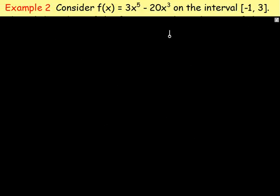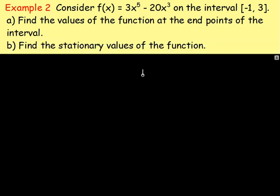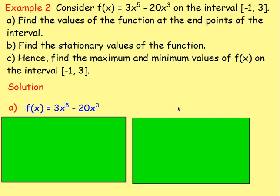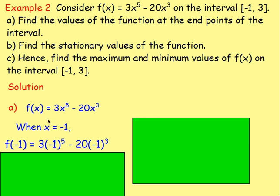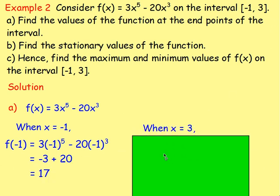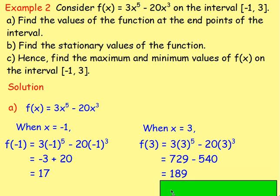Example 2. Consider f of x equals 3x to the power of 5 minus 20x cubed on the interval negative 1 to 3. Find the values at the end points, consider the stationary values, and find the maximum and minimum values for that interval. When x is negative 1: f(−1) equals 3 times negative 1 to the 5th minus 20 times negative 1 cubed, giving negative 3 plus 20, which is 17. When x is 3: f(3) equals 729 minus 540, which is 189.